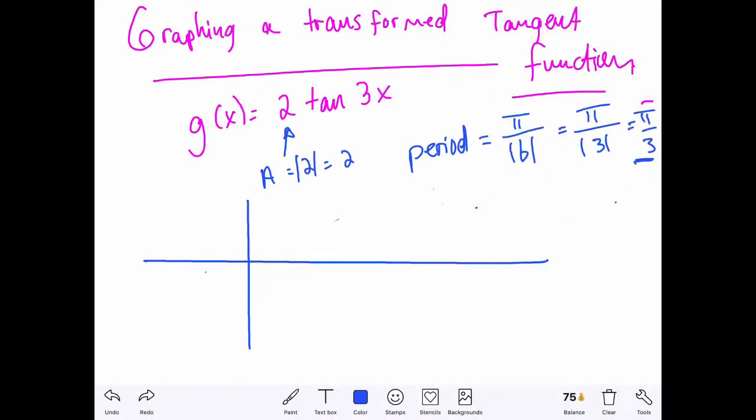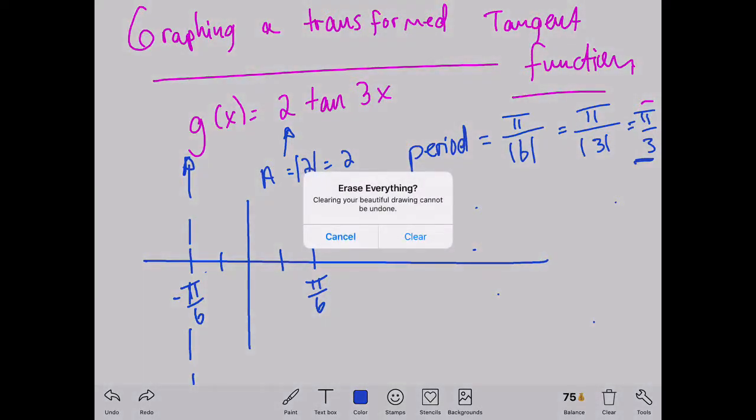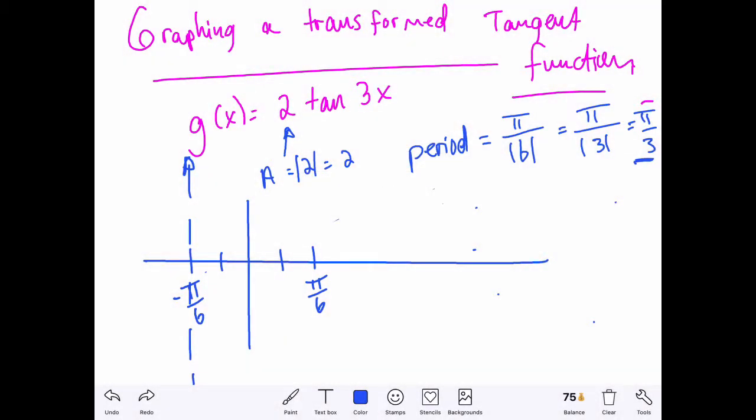And then what we want to do is go ahead and plot that π sixth, which was our π over 2b, and the negative π sixth, which we just multiplied by negative 1. And I want to go ahead and dot those in. Those are my asymptotes.